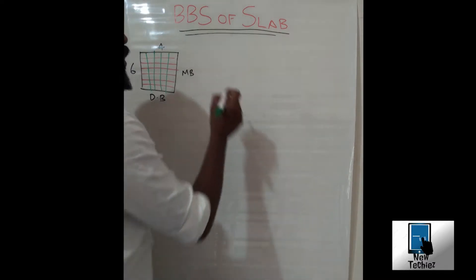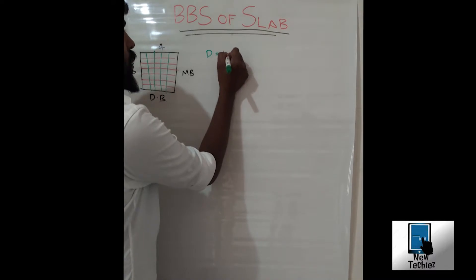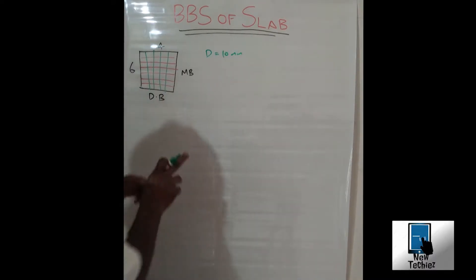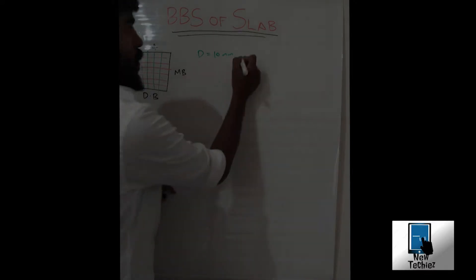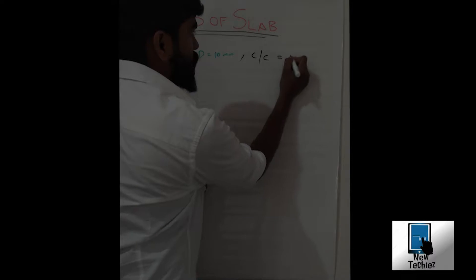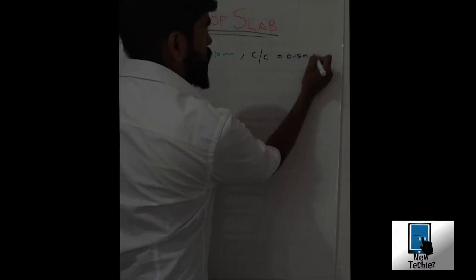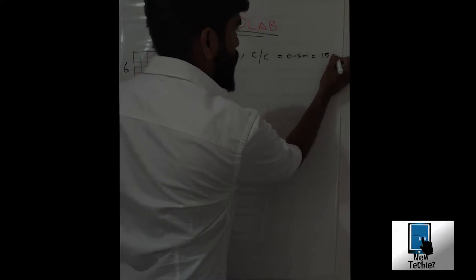Consider the diameter of bar is equal to 10 mm, that is 10 mm bar we are using. Also consider the center to center distance as 0.15 meter, that is equal to 150 cm.